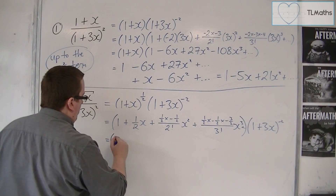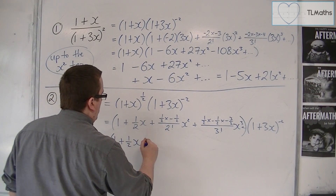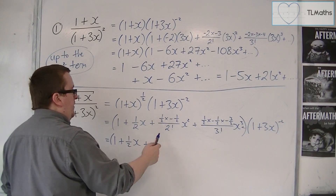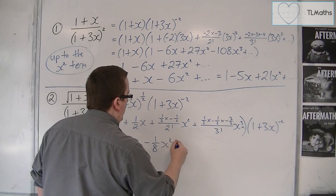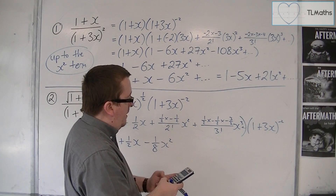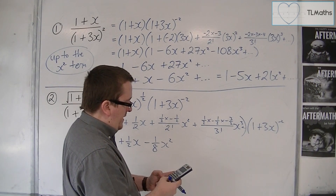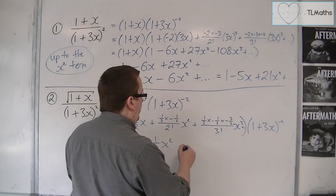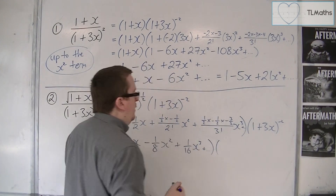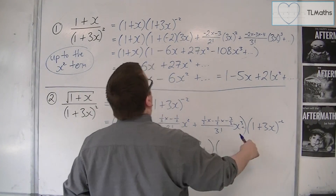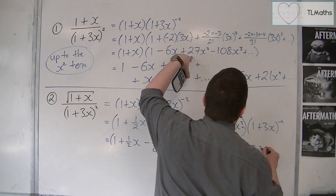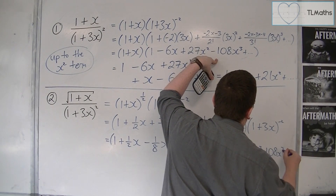Let's simplify (1 + x)^(1/2). We have one plus (1/2)x, plus — (1/2) times (−1/2) is (−1/4), divided by two is (−1/8) — so minus (1/8)x². Then (1/2) times (−1/2) times (−3/2) divided by six gives (1/16), so (1/16)x³, plus other terms. This gets multiplied by (1 + 3x)^(−2), which is: one minus six x plus 27x² minus 108x³ plus other terms.